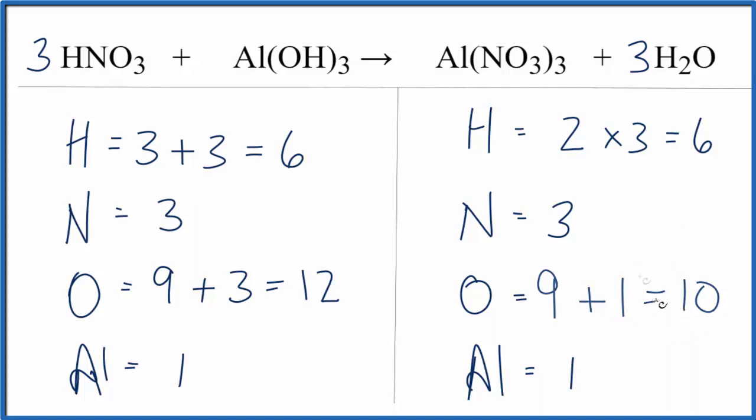We do need to update our oxygens, though. So we have three times three, that's nine, plus one times three, that's three. Nine plus three gives us 12, and all of a sudden we're done. This equation is balanced.